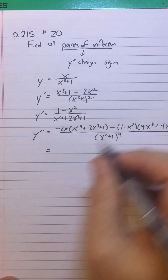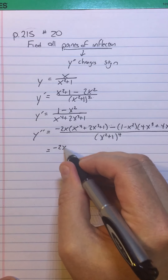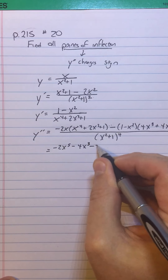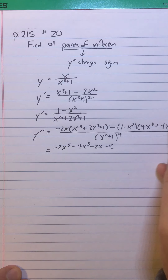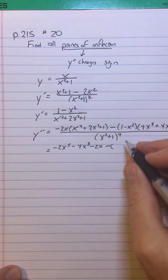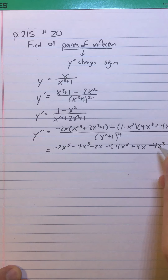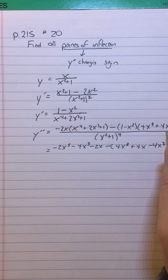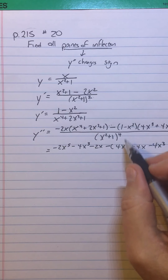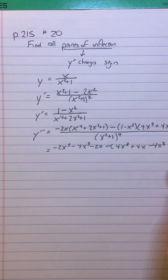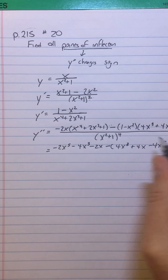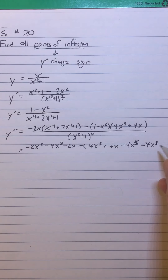Let's distribute the negative 2X: I have negative 2X to the fifth minus 4X cubed minus 2X. Then keeping the minus out and distributing: 1 times 4X cubed is 4X cubed, 1 times 4X is plus 4X, then minus X squared times 4X cubed gives minus 4X to the fifth, and negative X squared times 4X gives minus 4X cubed. So putting it together: 4X cubed plus 4X minus 4X to the fifth minus 4X cubed. The moral of the story is don't rush these things.